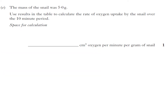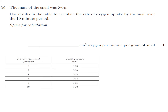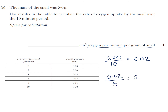There's a calculation question. Mass of the snail was 5 grams. Use results in the table to calculate the rate of oxygen uptake by the snail over the 10 minute period - we are looking for centimetres cubed per minute per gram. So we have 0.20 in 10 minutes, so if I divide by 10 I get per one minute. And then I want it per gram, so 0.02 divided by 5.